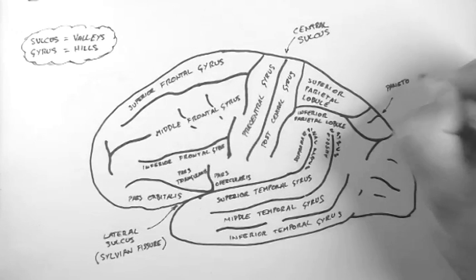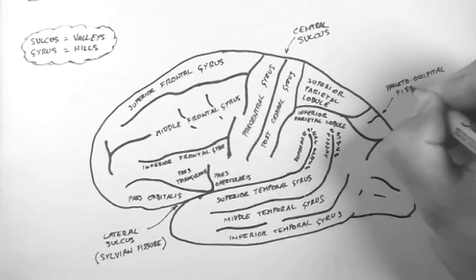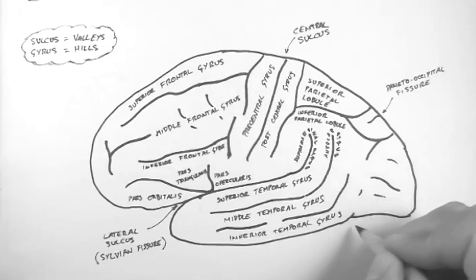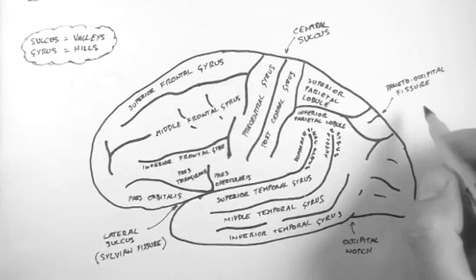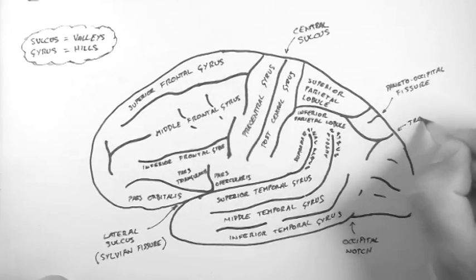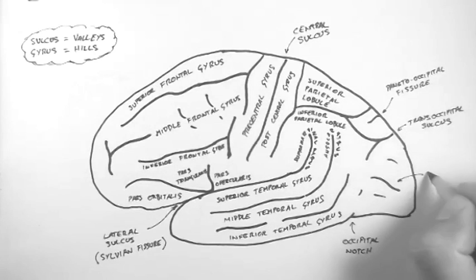Here is the parieto-occipital fissure. And this separates the parietal lobe from the occipital lobe. And this is the occipital notch. It does the same, but inferiorly. Here is the trans-occipital sulcus. And here is the lateral occipital sulcus.